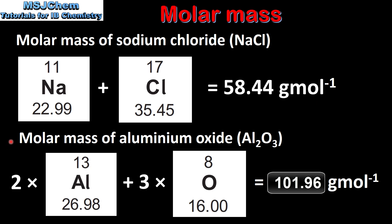And finally we'll calculate the molar mass of aluminium oxide. A formula unit of aluminium oxide consists of two aluminium ions and three oxide ions. So to find the molar mass we multiply the relative atomic mass of aluminium by two and the relative atomic mass of oxygen by three. This gives us a molar mass of 101.96 grams per mole.